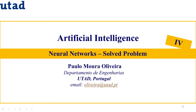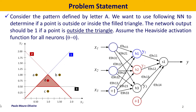Hello, we are going to present in this video a solved problem about neural networks. This was an exam problem here at UTAD. We have on the left a pattern defined by the capital A letter, with a filled triangle inside the letter. We have three lines: the blue line one, the red line two, and the black line three. Line one represents the output of hidden neuron one, line two is for hidden neuron two, and line three is for hidden neuron three.